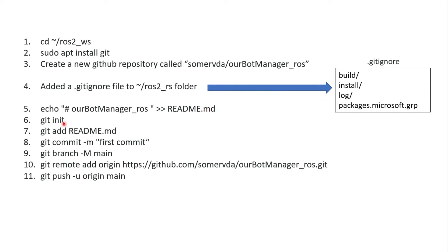I initialized a new Git repository from the ROS2 workspace folder. I did a git add on the README file, then my first commit called 'first commit'. I did git branch to make a main branch, git remote add origin to connect to the GitHub repository, and then git push origin main to sync the two repositories — which is what GitHub recommends for connecting to a new repository.